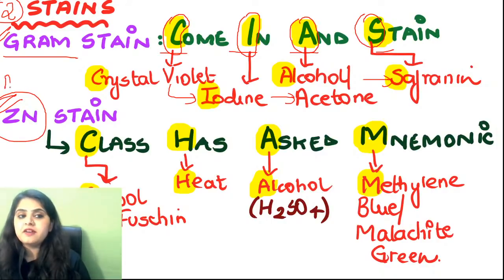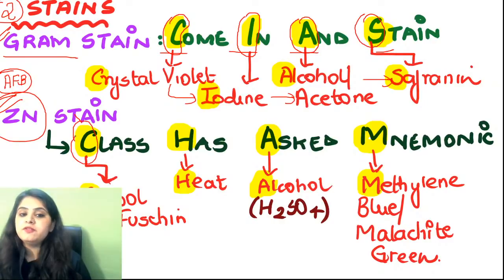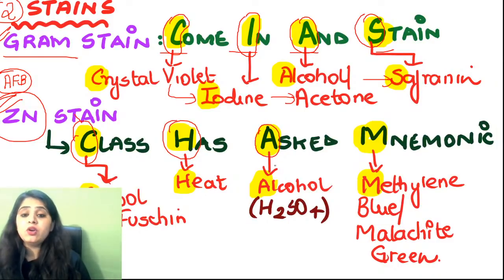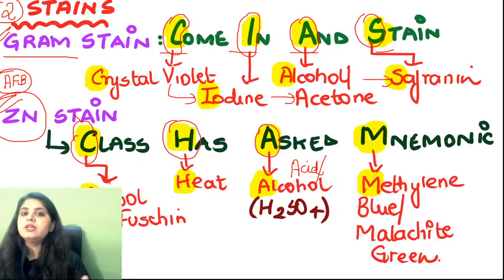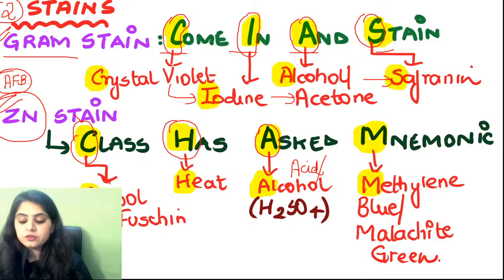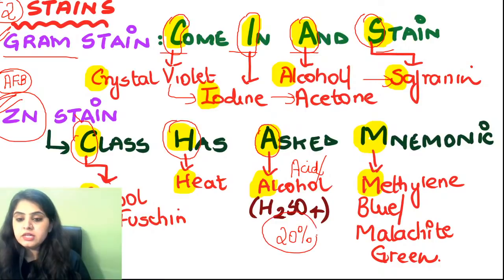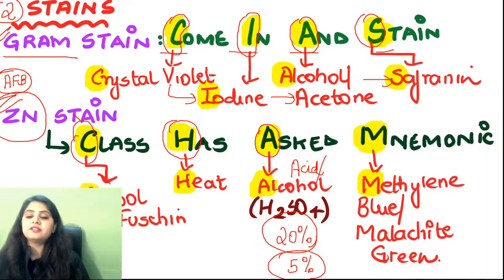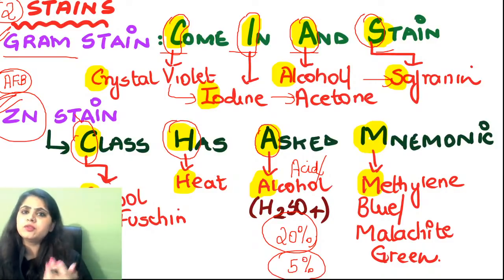For ZN stain (acid-fast stain): we have carbolfuchsin with heat applied, followed by acid or acid-alcohol as decolorizer. For TB, 20% H2SO4 sulfuric acid is preferred. For lepra bacillus, 5% sulfuric acid is used. The background counterstain is either methylene blue or malachite green — M&M. If you don't use heat, that modification is known as the Kinyoun stain.